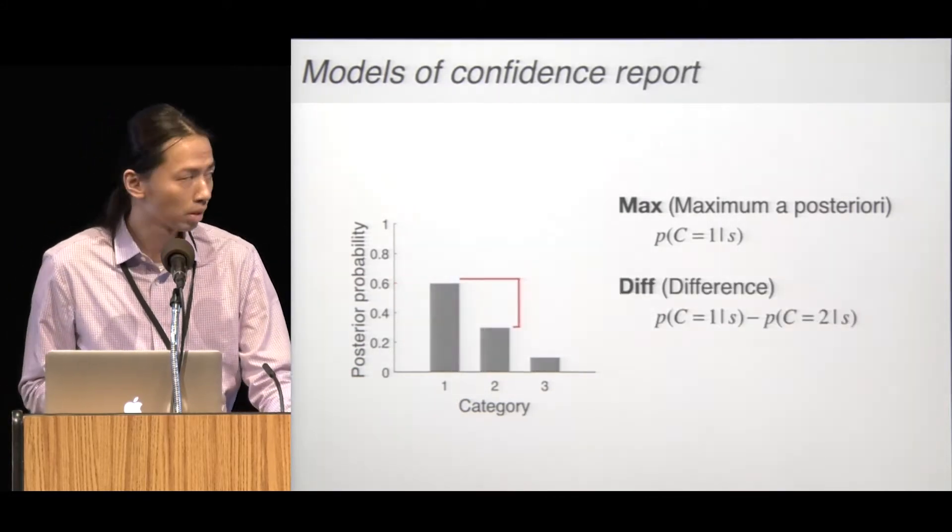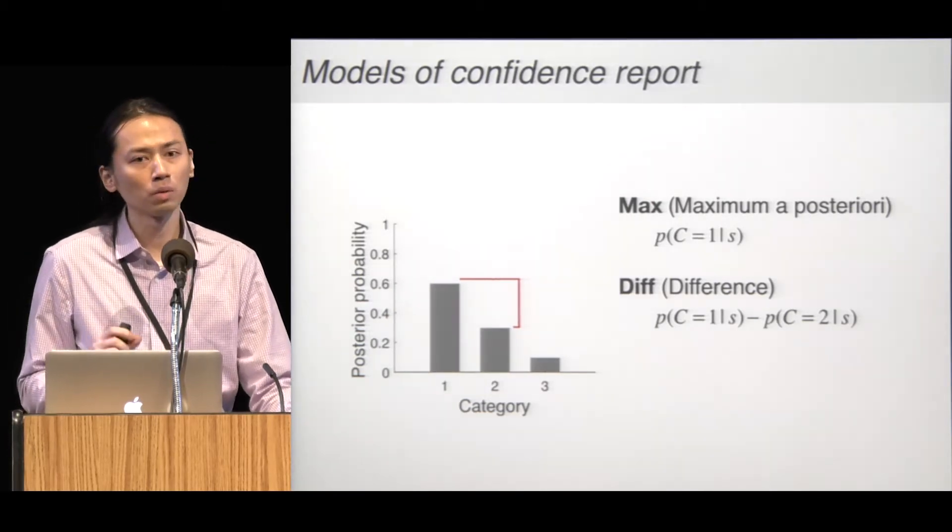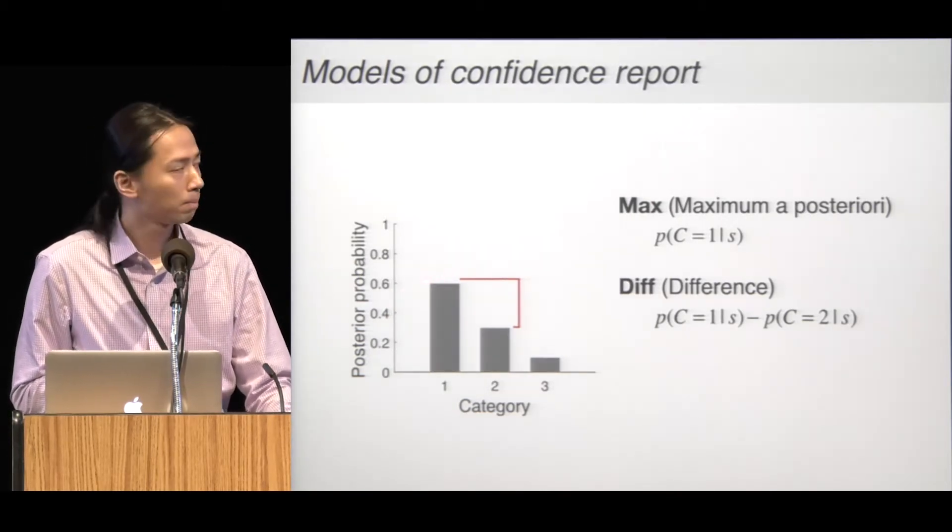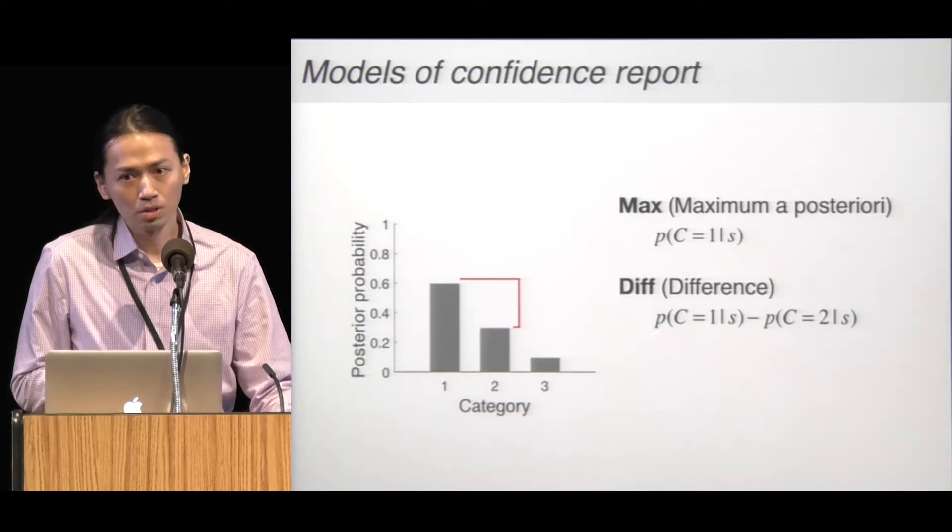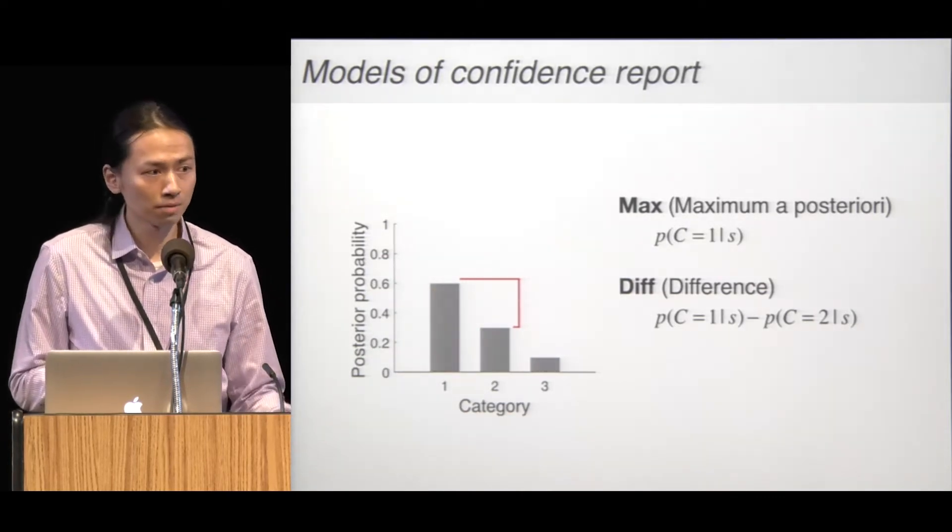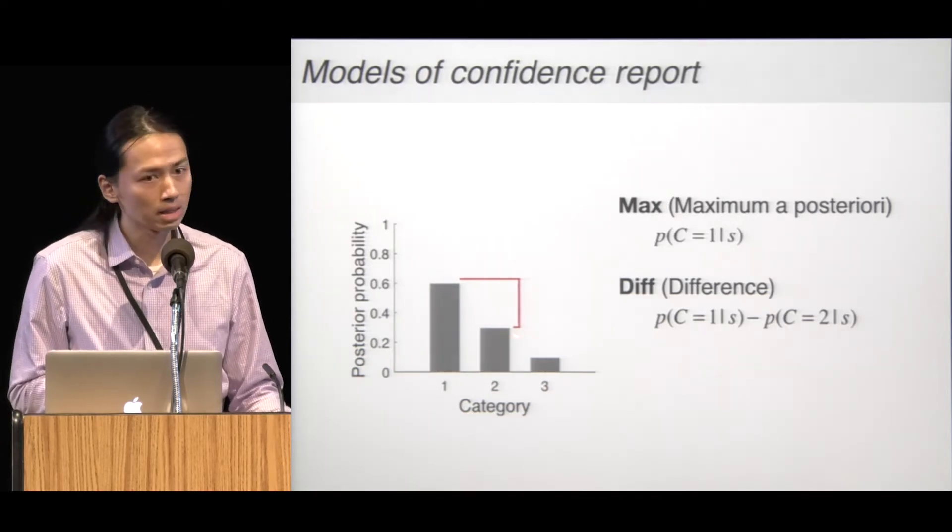In the difference model, we assume that confidence is not only determined by the chosen category, but influenced by the unchosen category. So confidence is modeled as the difference between the best and the second best option.